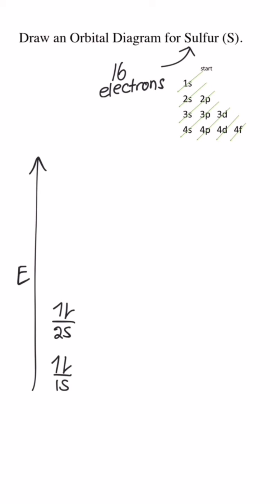Next we come to the 2p. A p sublevel has three orbitals, so I draw three lines like this. I'll spread the electrons out first. This is called Hund's rule. Electrons need to occupy empty orbitals before pairing up, and then I'll draw in the three down arrows after that.